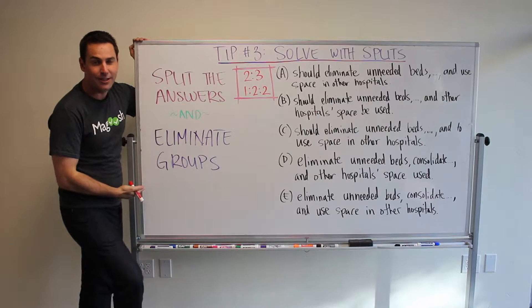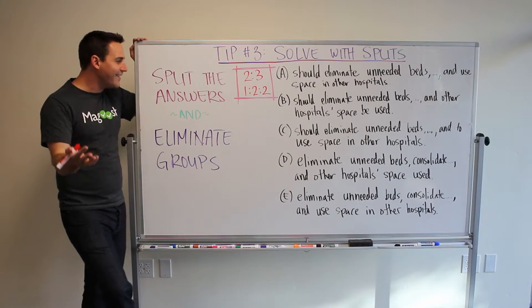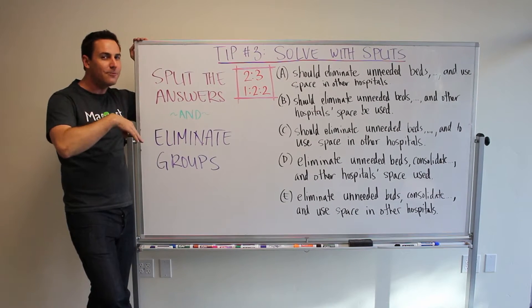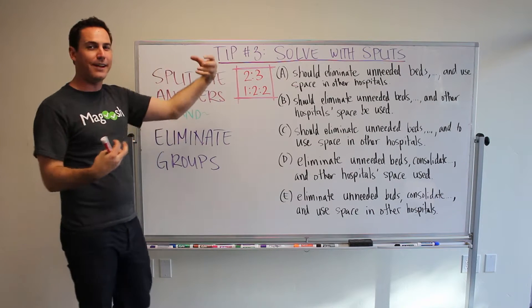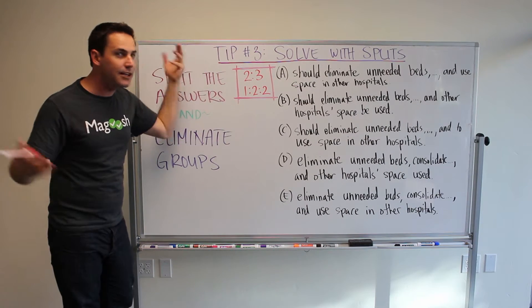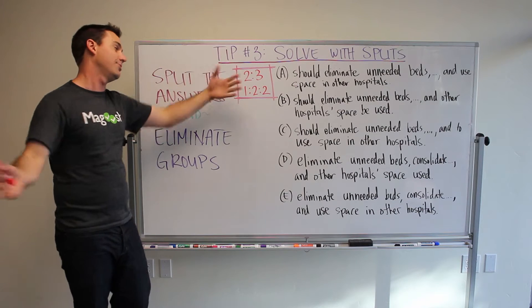This is super efficient because it means you don't have to read everything that's there, you just find what's different in the answer choices, group them together based on the differences or their similarities, and then eliminate the wrong groups. Boom. Super easy.